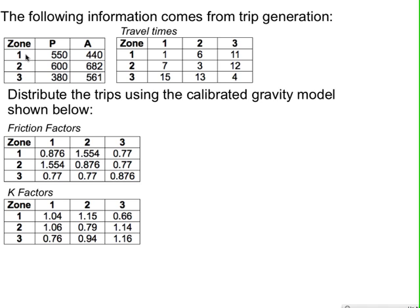We have a three-zone metropolitan area, and for each zone we've estimated the number of trips produced from each zone — the trips coming out — and the number of trips attracted to each zone, based on socio-economic factors. We've also estimated the travel times between zones; for example, traveling from zone 1 to zone 2 takes six minutes. These travel times have been used to calibrate the gravity model.